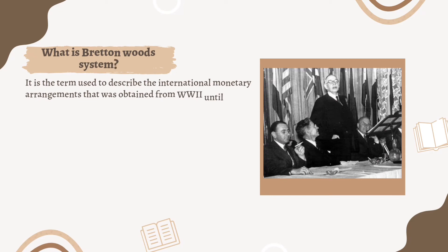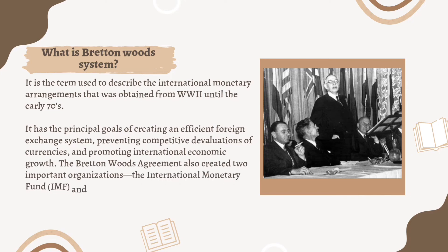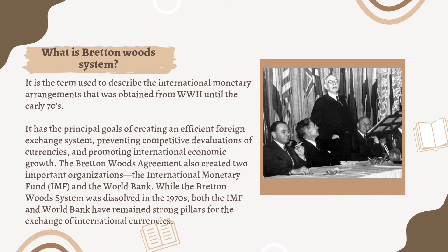So what is the Bretton Woods system? The Bretton Woods system is the term used to describe the international monetary arrangements that was obtained from World War Two until the early 70s. It has the principal goals of creating an efficient foreign exchange system, preventing competitive devaluations of currencies, and promoting international economic growth. The Bretton Woods agreement also created two important organizations: the International Monetary Fund and the World Bank. While the Bretton Woods system was dissolved in the 1970s, both the IMF and World Bank have remained strong pillars for the exchange of international currencies.